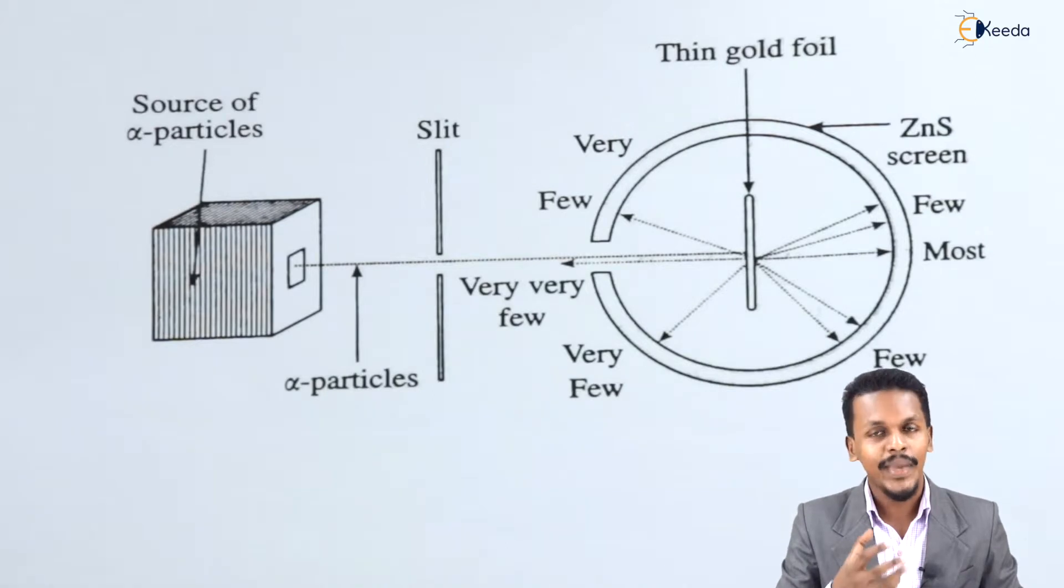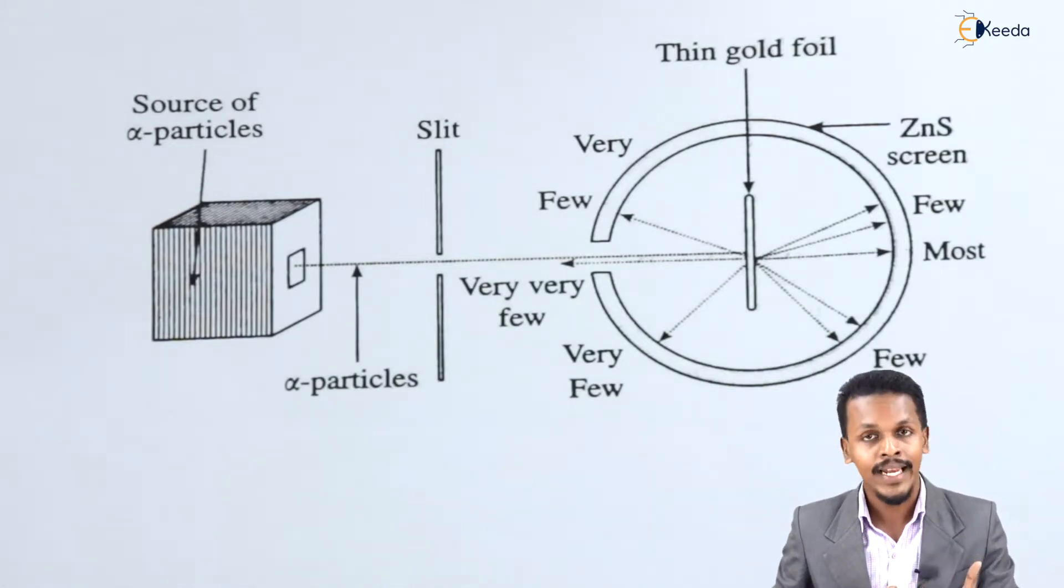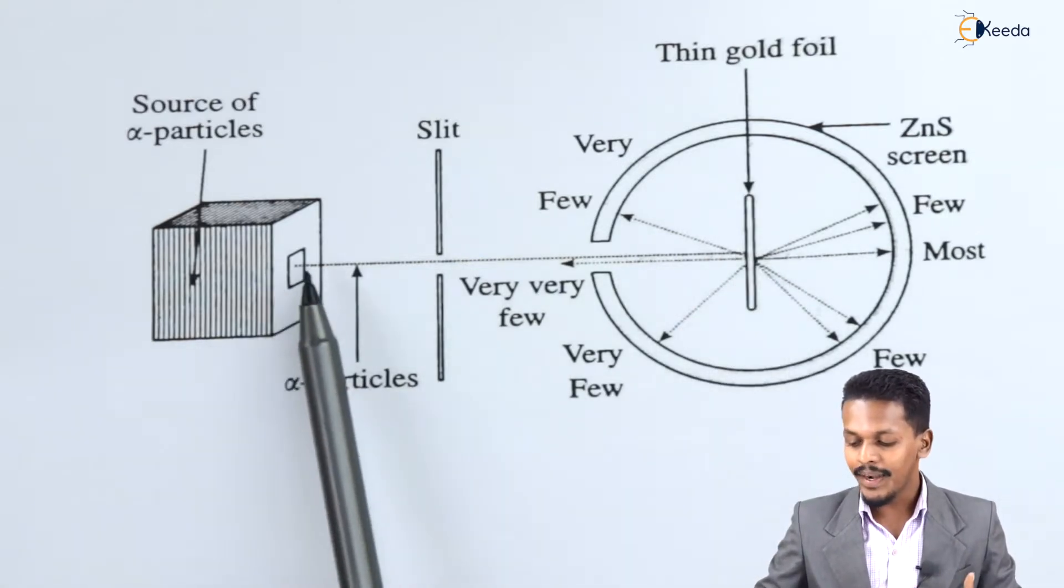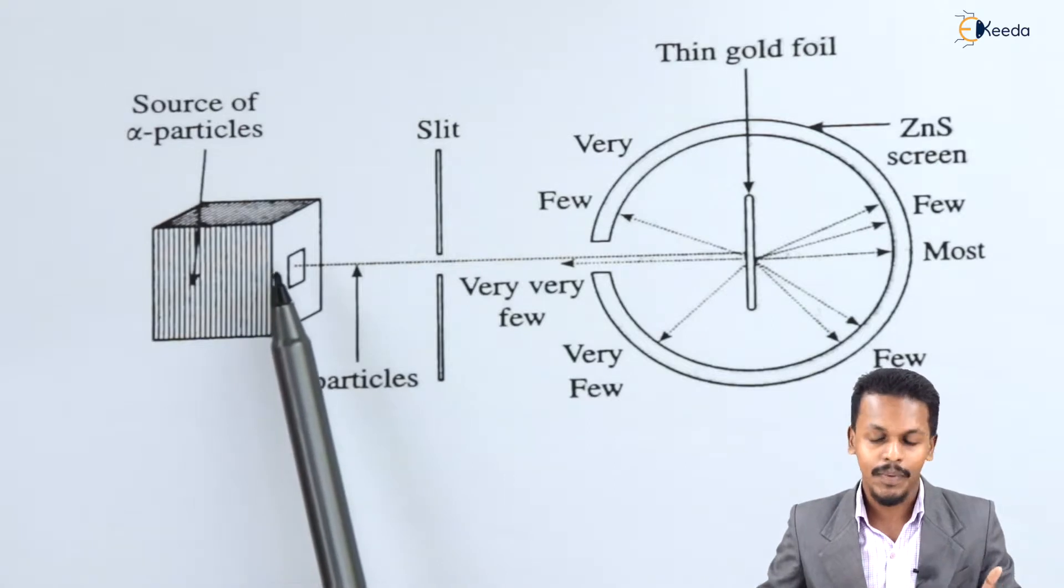What happens? What is the main goal of this experiment? The main goal of this experiment is to determine the scattering of the alpha particles, and from this we could determine the structure of a particular atom. Here, the alpha particle is a positively charged particle.